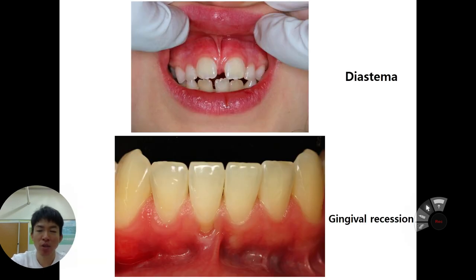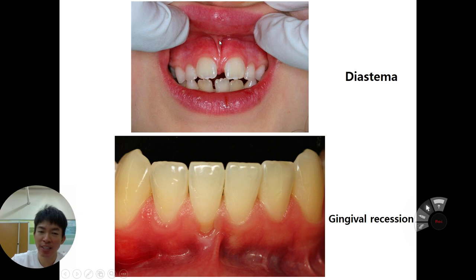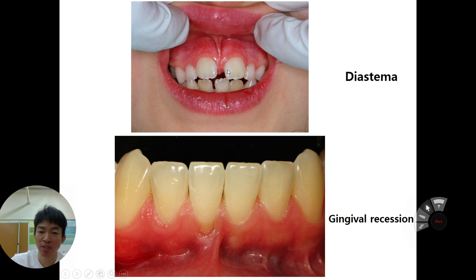Today we are talking about an interesting phenomenon. This is called the frenum. The frenum is a very tight tissue which can attach the upper or lower lip to your gingival, your periodontal tissue. Sometimes this line is quite close to your tooth and can cause diastema — a gap between the front teeth.